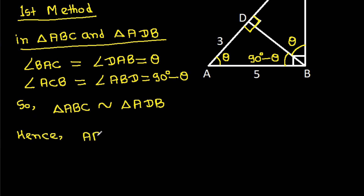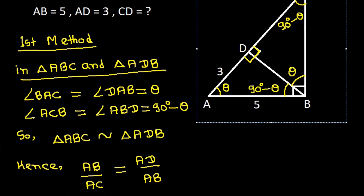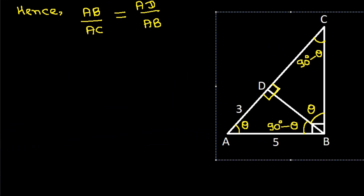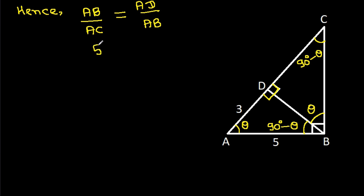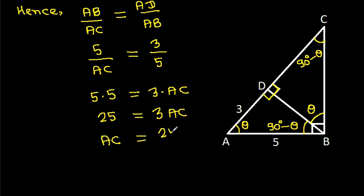Hence, AB by AC is equal to AD by AB. We have AB is 5 by AC, equal to AD is 3 by AB is 5. If we cross multiply, then 5 times 5 equals 3 times AC. So 25 equals 3 AC, and AC is equal to 25 by 3.